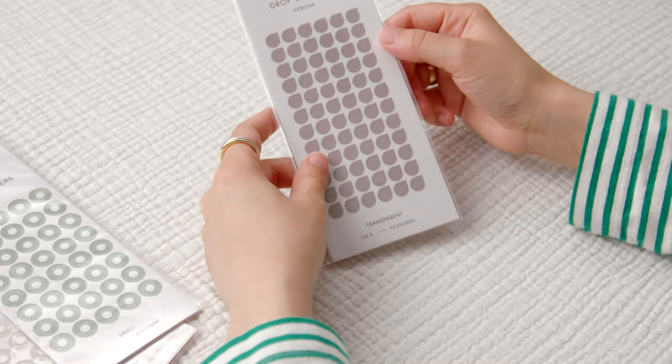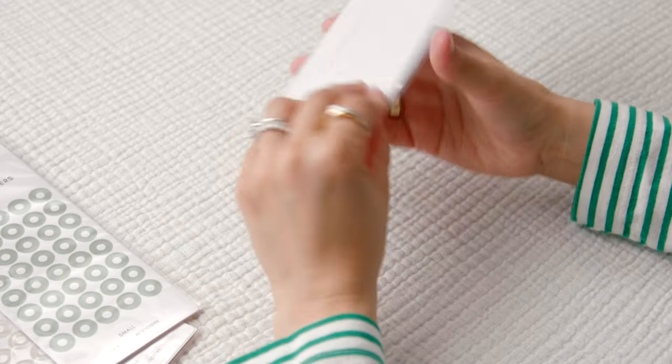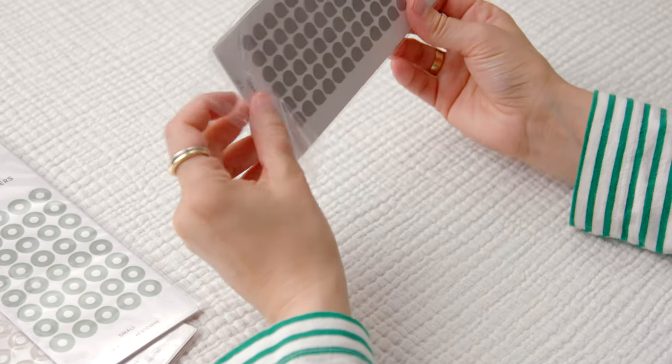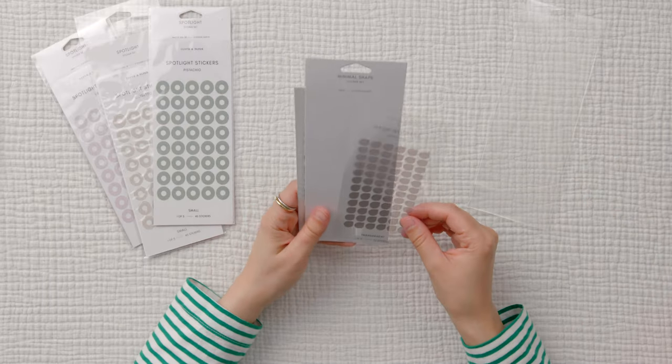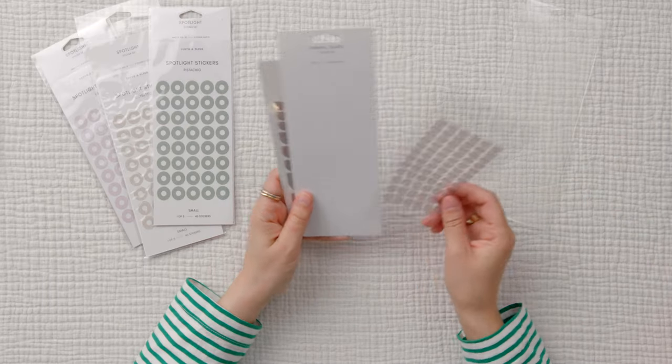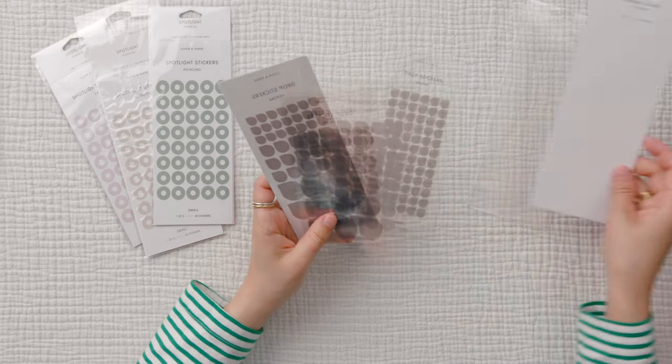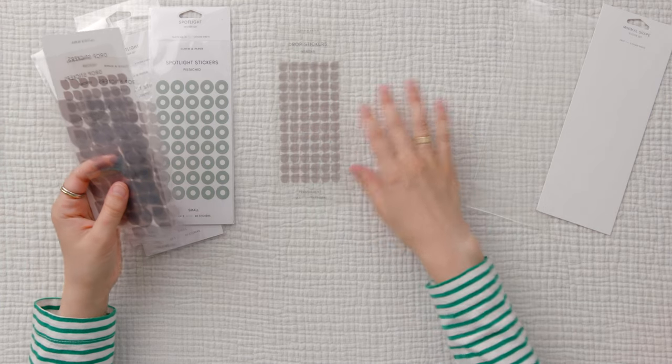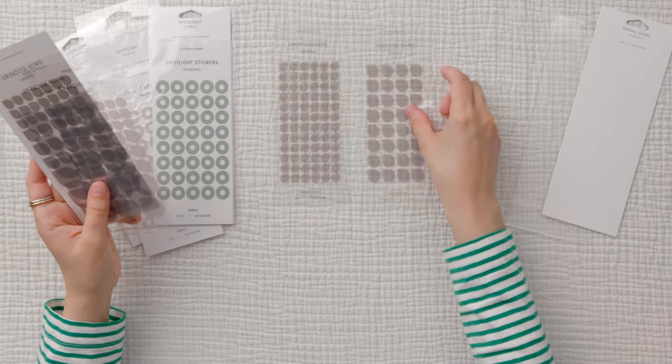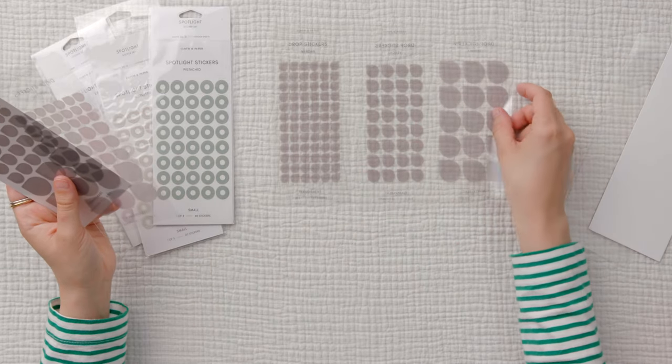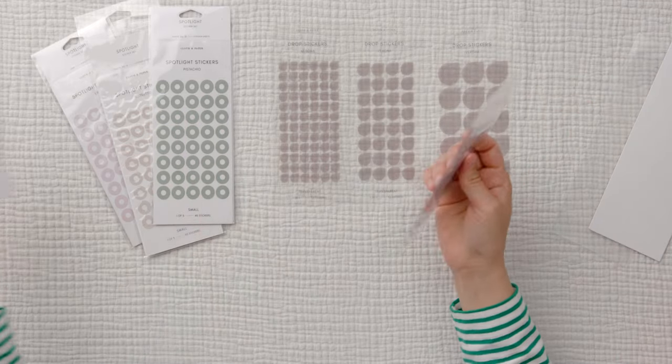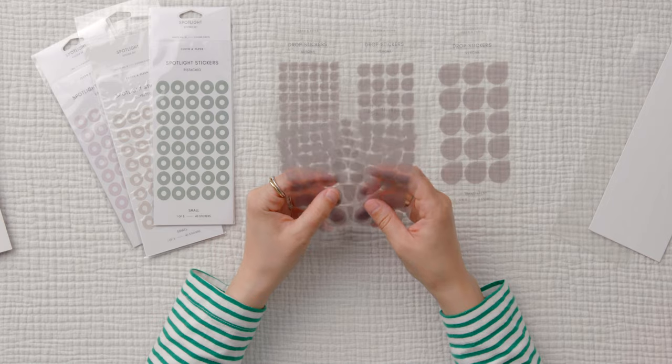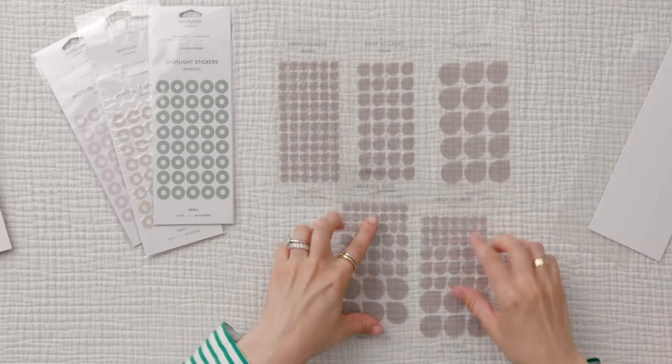So I picked up a set of drop stickers. This is a new shape. I've seen a couple of people use this shape. This sticker pack is in the color Verona and it comes in different sizes. We have a small drop, a medium-sized drop, and then a large-sized drop. And then there are two more sheets that give you just a couple more rows of small, medium, and large drops.